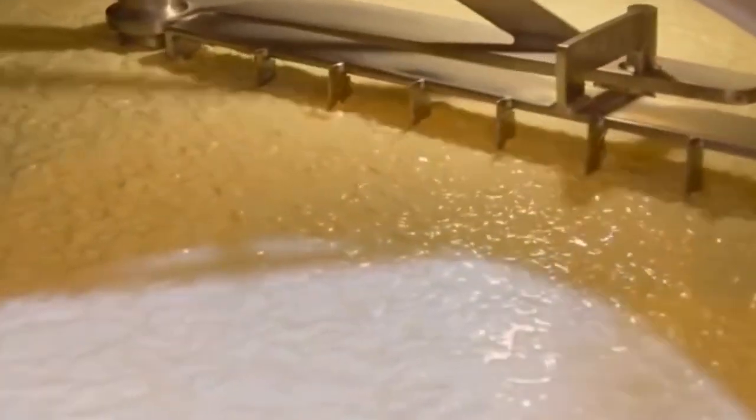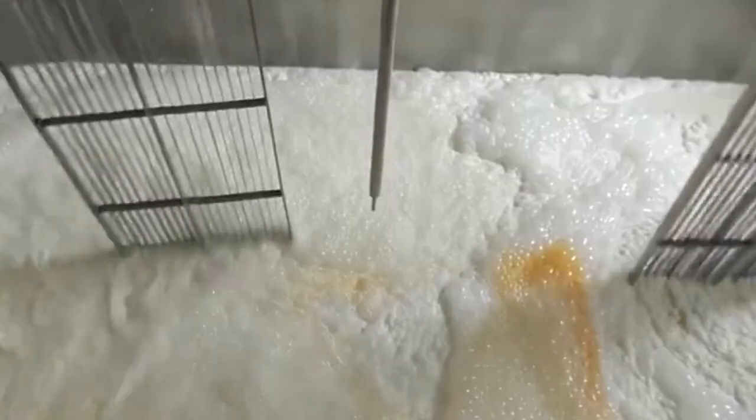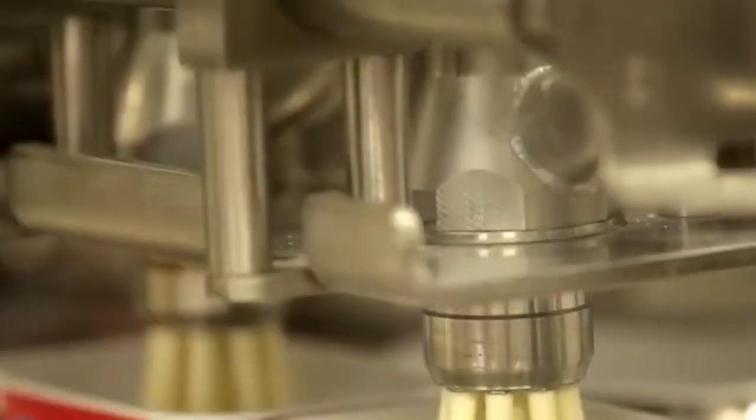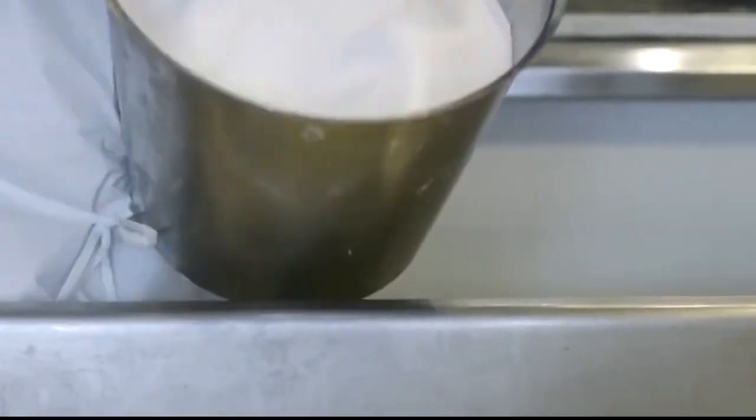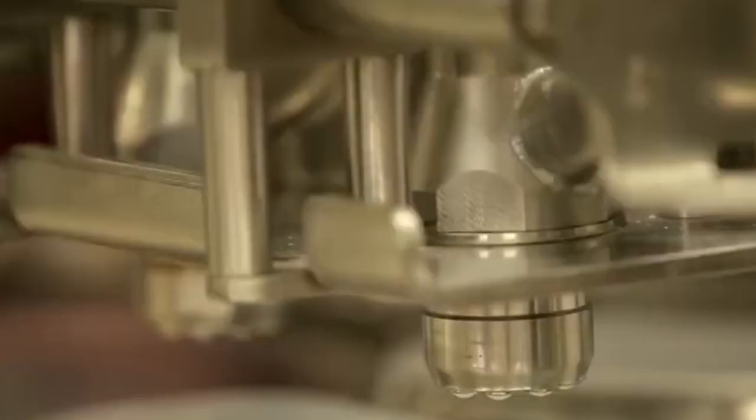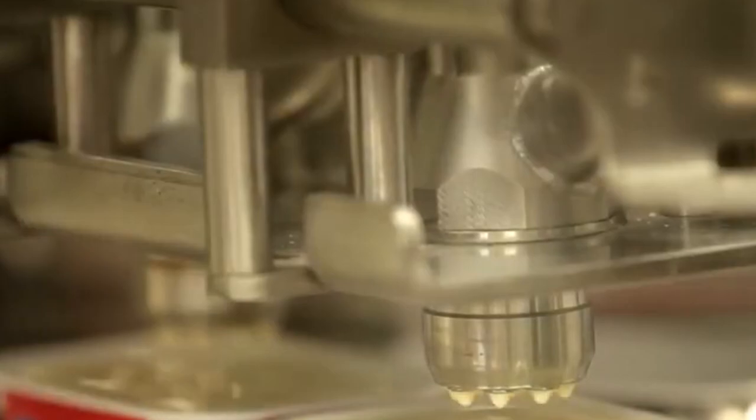Brining: adding flavor and protection. After shaping, the cheese is placed in a salty water bath called brine. This step does two important things. First, the salt adds a tasty, savory flavor to the cheese. Second, it helps keep the cheese fresh by stopping bad bacteria from growing. The cheese can stay in the brine for a few hours or even several days, depending on the type. The longer the cheese soaks, the saltier it will taste.